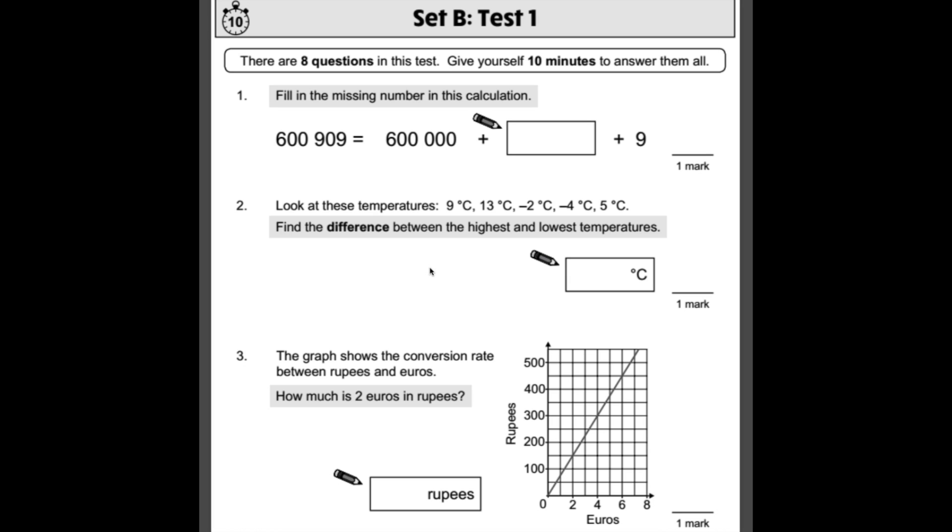Fill in the missing number in this calculation. Looking at this question, you should spot that it is a partitioning question. We have 600,909 which is the same as 600,000, which we've got here. We've got a 9, so the only bit we've not got in this box is this bit here, which is 900. If we add these all together, we'll get that number there. So that's your answer, 900.